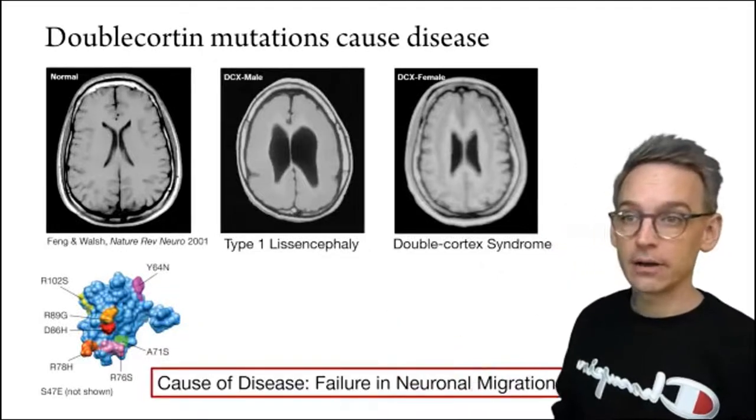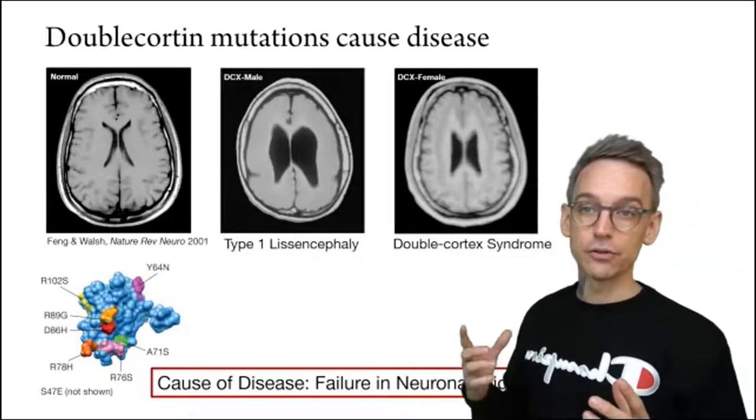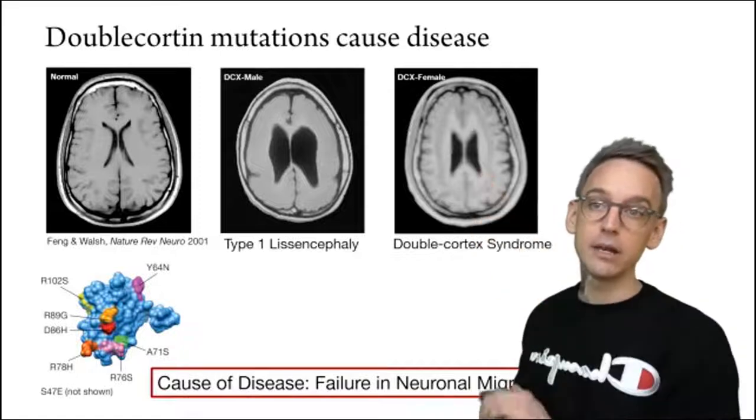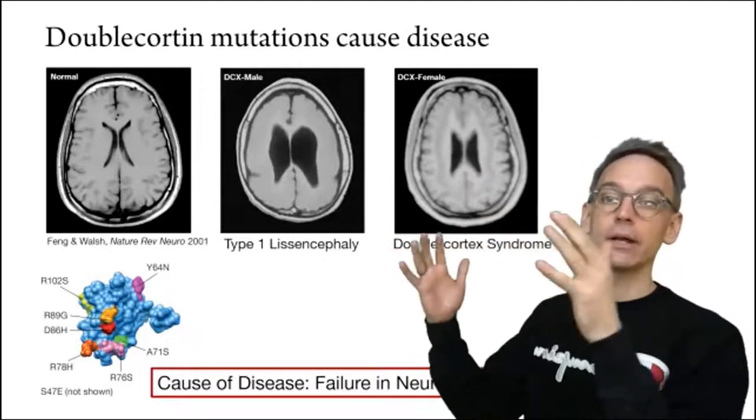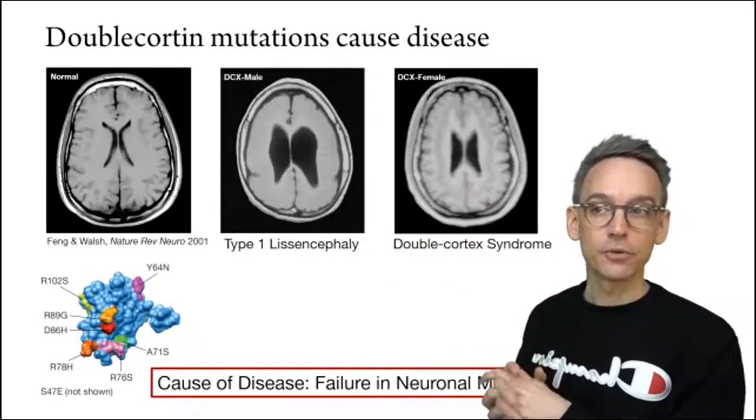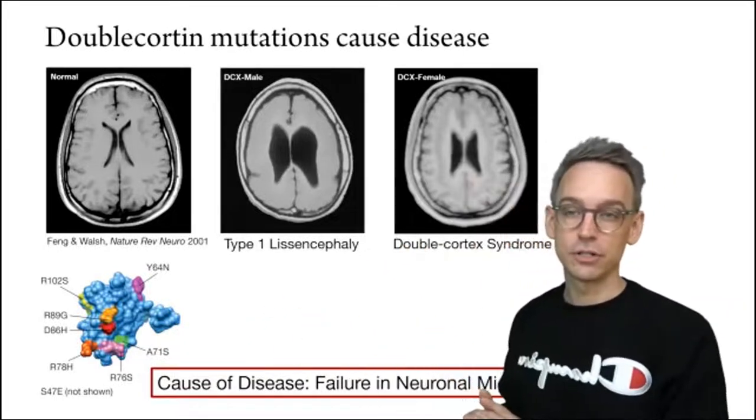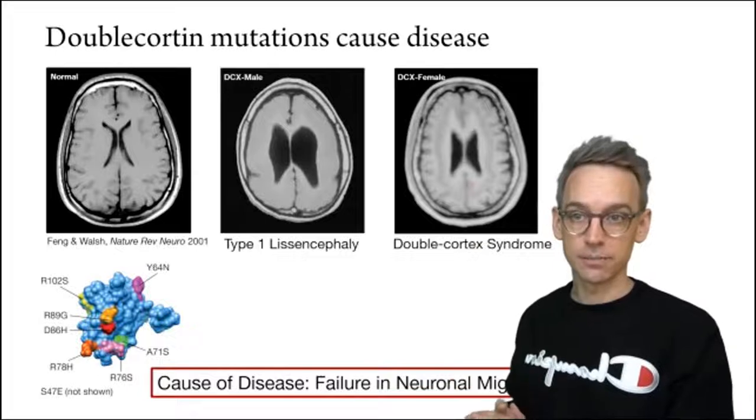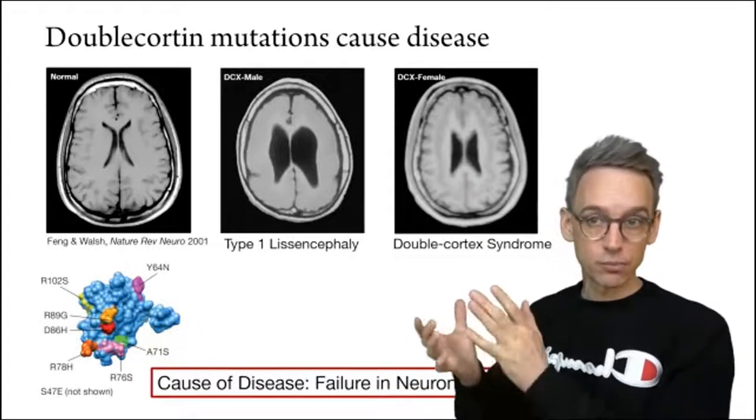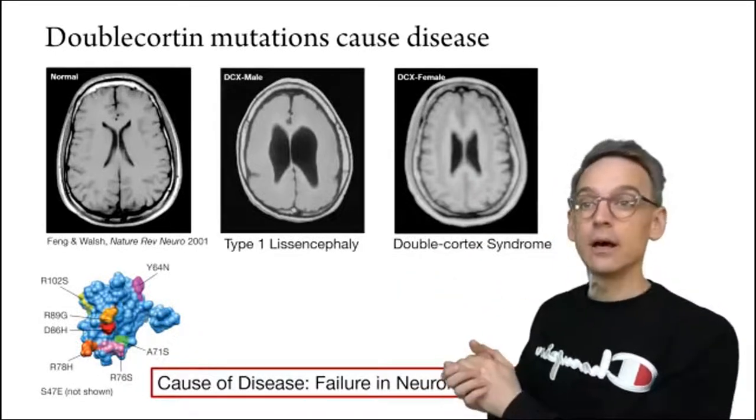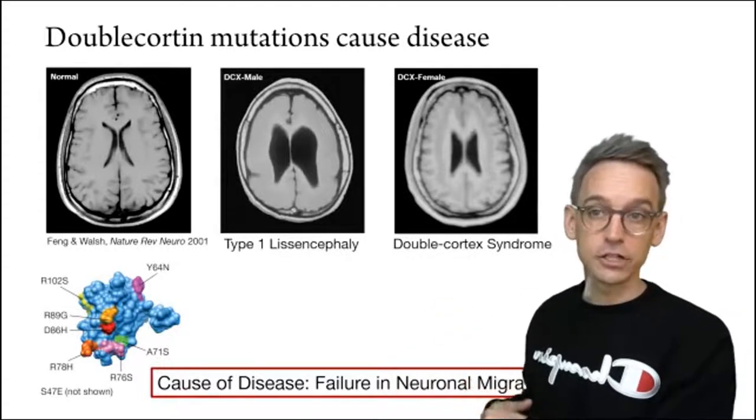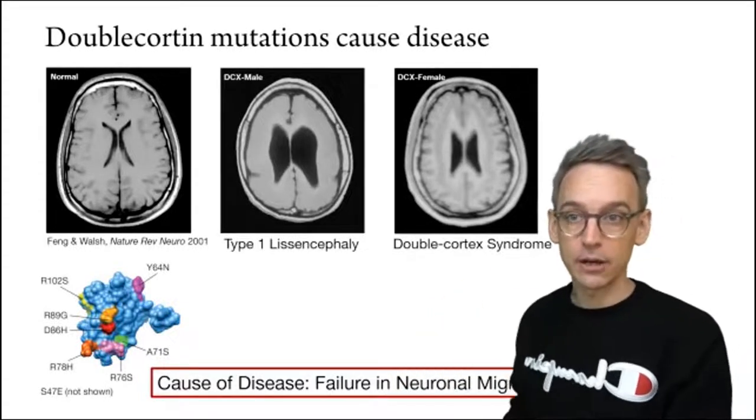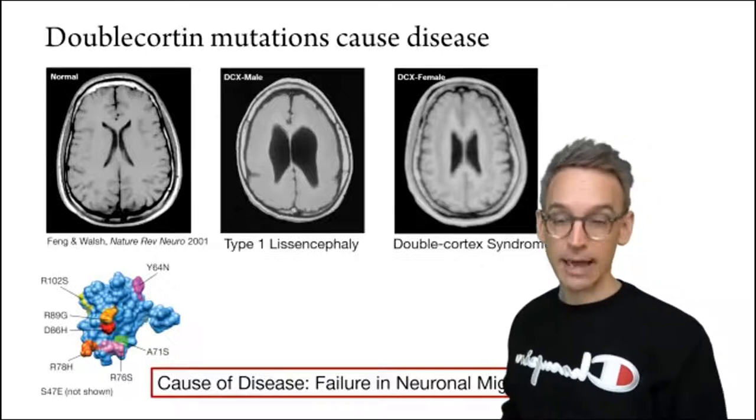The cause of this disease, it turns out, is a failure of neuronal migration. So neurons are born deep within the brain near the ventricles, those dark X-shaped structures there. They migrate out great distances. And for some reason, one amino acid substitution in doublecortin causes that entire process to break down. So that's what my lab is currently focused on, understanding the molecular basis of this disease using a combination of cell biology and biophysics. And I'm happy to take questions that you might have afterwards.